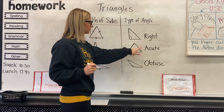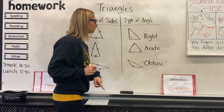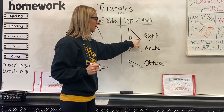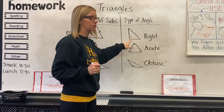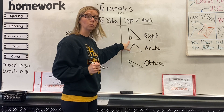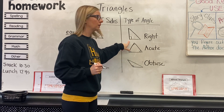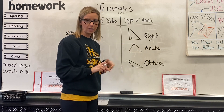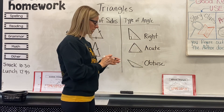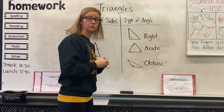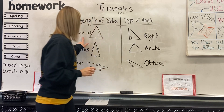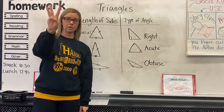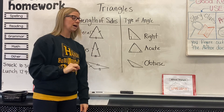An acute triangle: all three angles are acute. A right triangle — yes, it does have acute angles, but as long as it has one right angle, then it is considered a right triangle. So let's review. Equilateral triangle: three congruent sides.